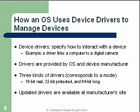Device drivers specify how to interact with a device — for example, a device driver links a computer to a digital camera. Drivers are provided by the OS and the device manufacturer. Three kinds of drivers correspond to the mode: 16-bit, 32-bit, or 64-bit. Updated drivers are available at manufacturer websites. I always suggest students go to these sites and get updated drivers, as this can correct a lot of problems. Engineers generally don't have drivers completely updated by the time the device ships, and they're always coming up with enhancements or improvements.